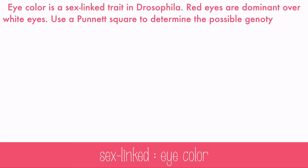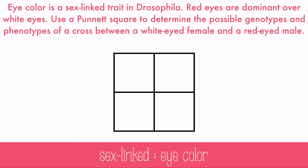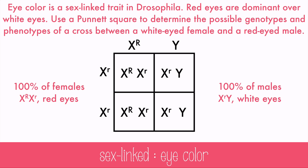Let's try one more. Eye color is a sex-linked trait in Drosophila, a type of fly. Red eyes are dominant over white eyes. Use a Punnett square to determine the possible genotypes and phenotypes of a cross between a white-eyed female and a red-eyed male. The male has the dominant red-eyed gene, and since white eyes are recessive, the female must have two white-eyed alleles. Setting up the cross shows two possibilities: all females will be heterozygous with red eyes, and all males will be white-eyed.